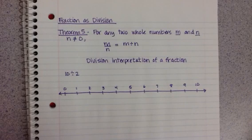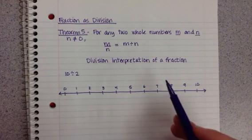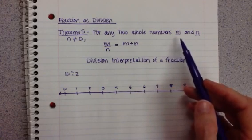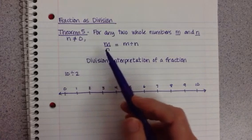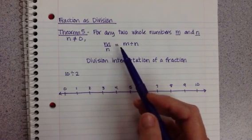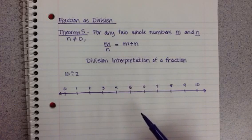Okay, so finishing up our discussion on fraction as division, let's start off with Theorem 5. For any two whole numbers, m and n, and making sure that n is not 0, we can write m over n means the same as m divided by n.